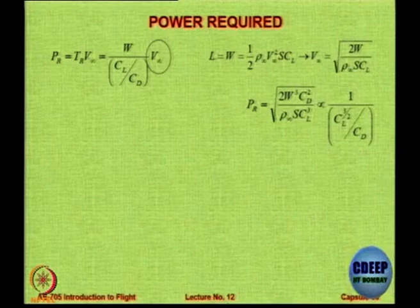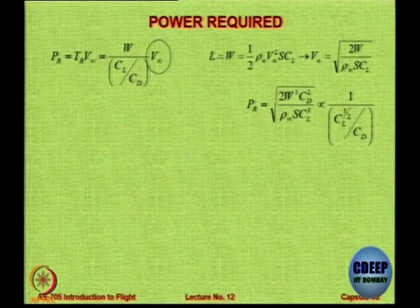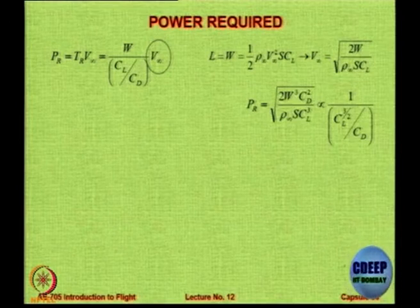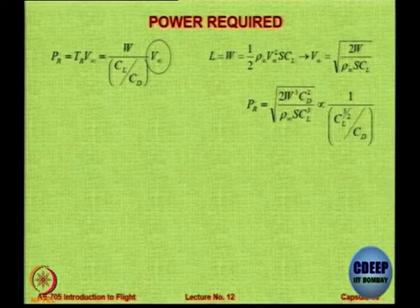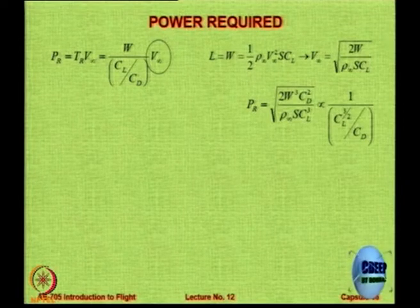Now for a moment let us not worry about aircraft weight because that equals lift and is a constant. ρ∞ and S are also fixed values for a given altitude and given aircraft. So Pr will be directly proportional to √(CD²/CL³), or equivalently, inversely proportional to CL^(3/2)/CD. If the ratio CL^(3/2)/CD is large, then the power required is going to be less.